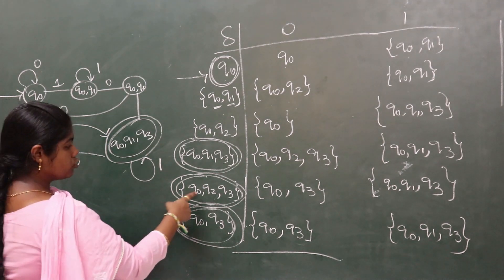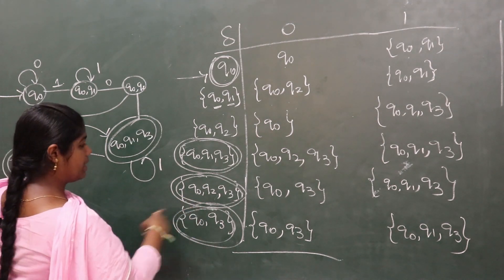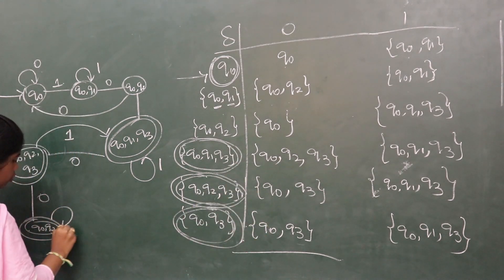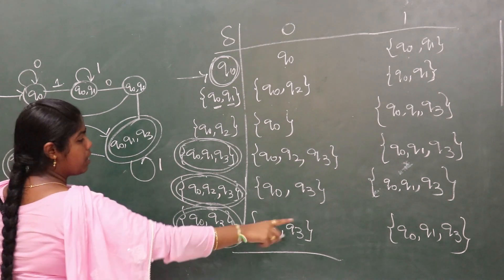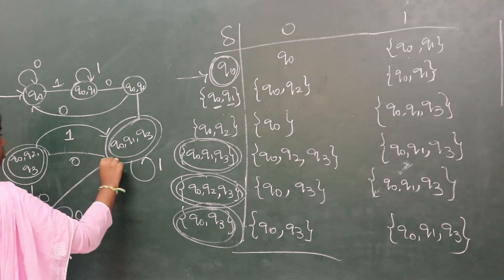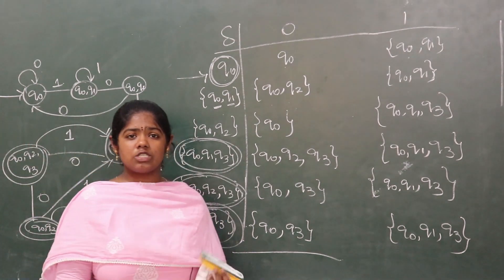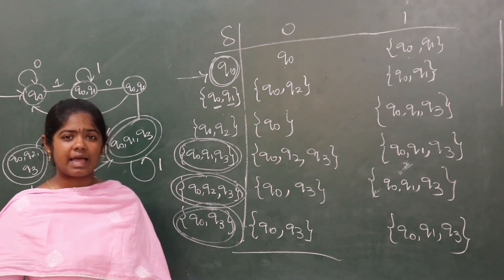Again, q0, q2, q3 is completed. So q0, q3 on 0 goes to q0, q3, and for 1 it goes to q0, q1, q3. In this way, the conversion between NFA to DFA is calculated.